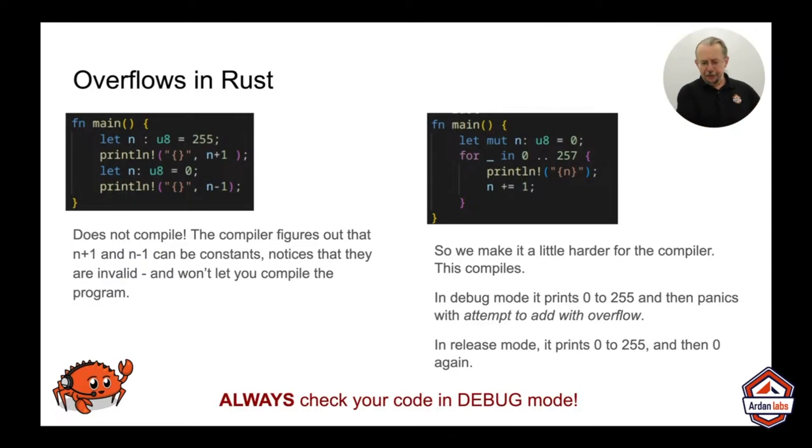Unfortunately, following every possible code flow would be a case of cargo build and go on vacation. So we let mutable n 0 and we add 1 to it 257 times. And what happens? Well, the answer is if you're in debug mode, the default, so you've typed cargo run, you get 0 to 255. And then the program panics with the message attempt to add with overflow.